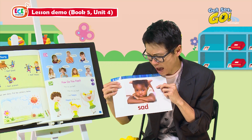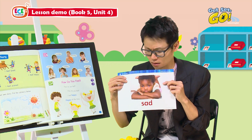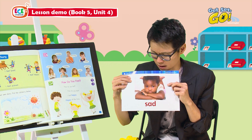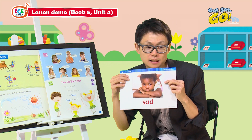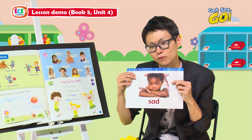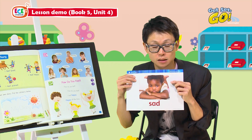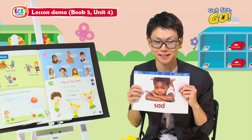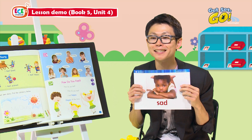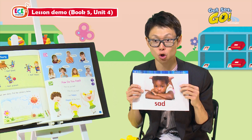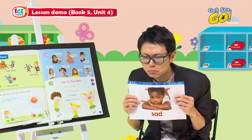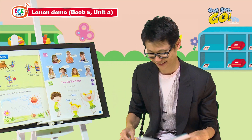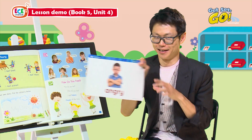Maybe it's because he misses his friend. He wants to see his friend, but his friend is away, so he's sad. When you see this picture, you need to do two things: you need to show me a sad face, and also you need to say the word 'sad.'